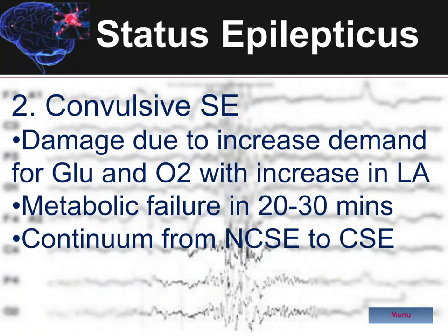There may actually be a continuum of convulsive status to non-convulsive, again because its manifestations may be so subtle. It's been estimated that 37% of patients who have been treated for convulsive status continue to have electrographic seizures.